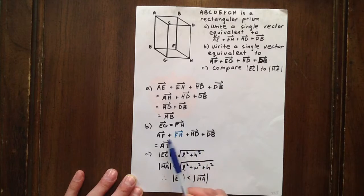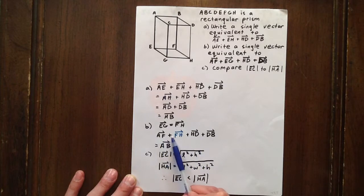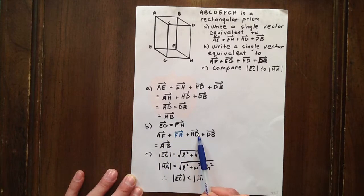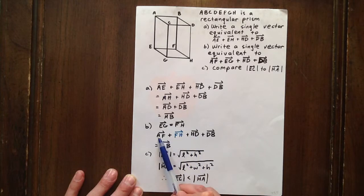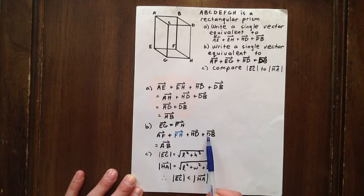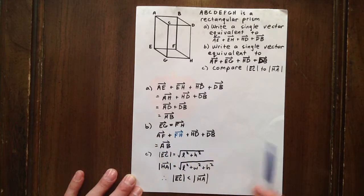Now add H to D, so it's like going from A to H and then H to D, and you have the vector AD. And finally, try going from A to D and then from D to B. That's like going from A to B.